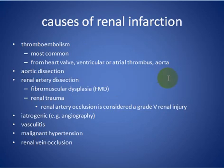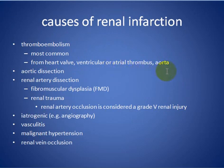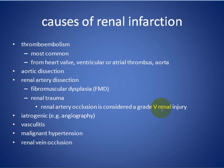What are the causes of renal infarction? There are many causes. Most commonly it is thromboembolism, usually resulting from heart valve, ventricular, or arterial thrombus. Other causes include aortic dissection, renal artery dissection which can be due to fibromuscular dysplasia, renal trauma especially grade 5 with disruption of the renal vessels, iatrogenic causes, angiogram, vasculitis, malignant hypertension, and renal vein thrombosis.